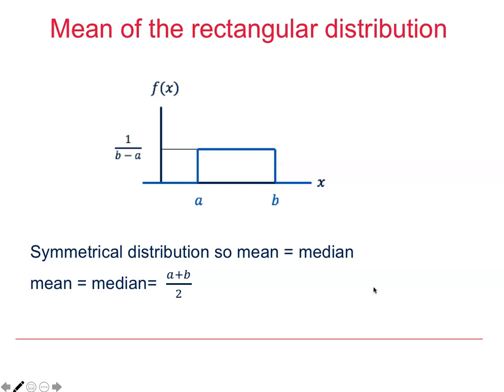The rectangular distribution is symmetrical, so therefore the mean is equal to the median. And both of these are at the midpoint between A and B, therefore A plus B over 2. Now, while we know this, it is also a requirement that we derive the mean by integration.